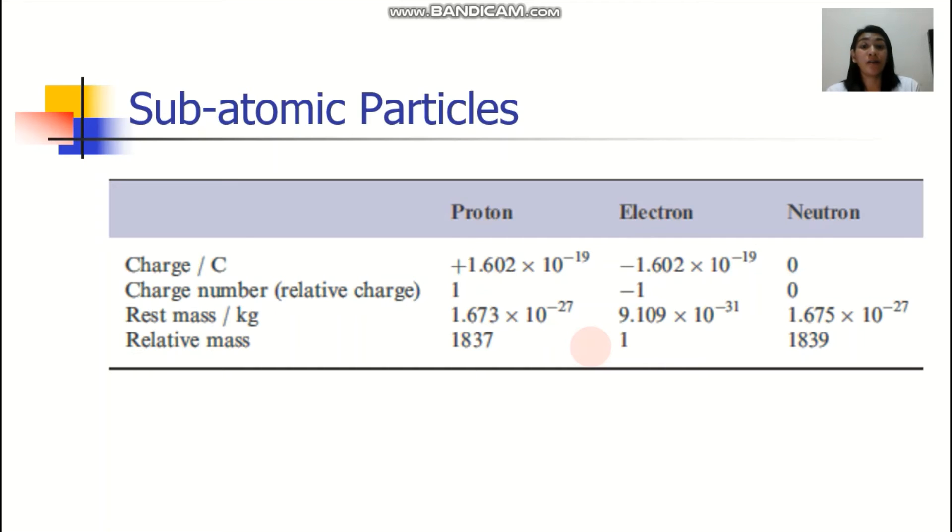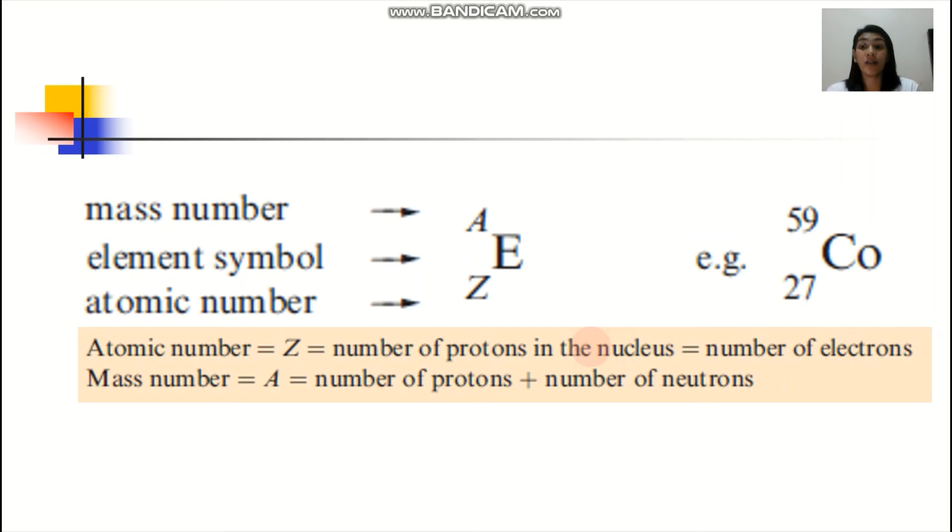Now, once you know the properties or once you know the number of protons, electrons, and neutrons, it could actually give you the atomic number and also the mass number of an element. In your periodic tables, you would see here, for example, you would see now an element symbol, and then you have now a superscript, which is the mass number, and a subscript, which is your atomic number. But it depends. Usually, ganito yung appearance sa periodic table.